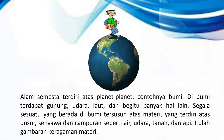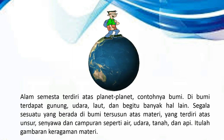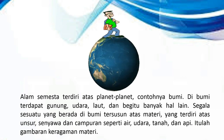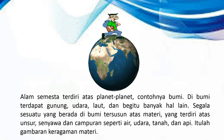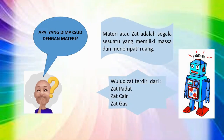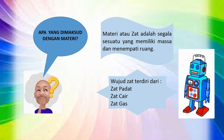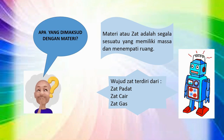Alam semesta terdiri atas planet-planet, contohnya bumi. Di bumi terdapat gunung, udara, laut, dan begitu banyak hal lain. Segala sesuatu yang berada di bumi tersusun atas materi, yang terdiri atas unsur, senyawa, dan campuran, seperti air, udara, tanah, dan api. Itulah gambaran keragaman materi. Materi atau zat adalah segala sesuatu yang memiliki masa dan menempati ruang.